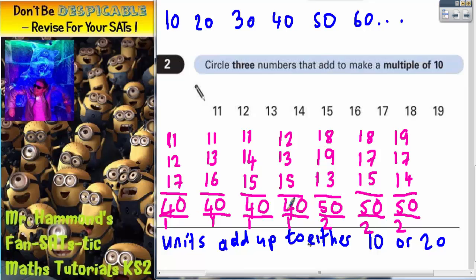As you can see, the totals are either forty or fifty, which are multiples of ten. So the strategy works.